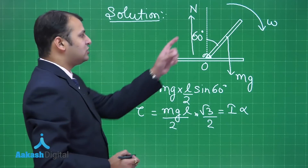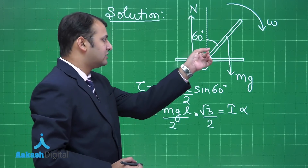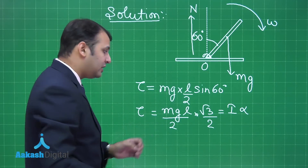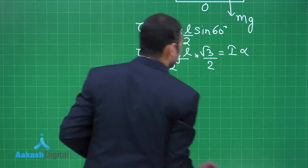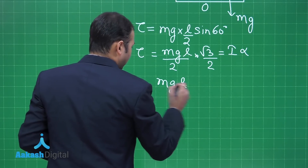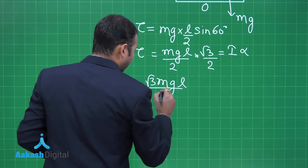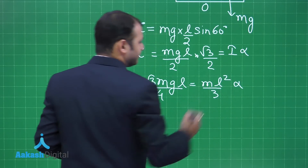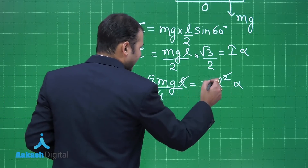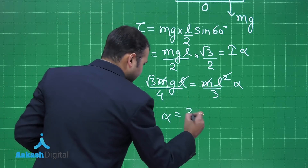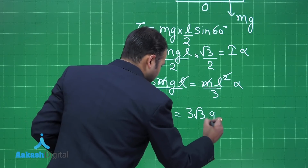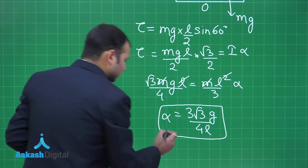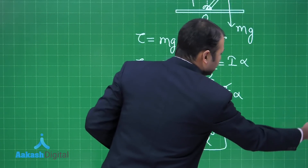This torque also equals Iα. The rod rotates about its hinge at the corner, so the moment of inertia is ML²/3. Setting mg·L·√3/4 = (ML²/3)·α and cancelling terms, we get angular acceleration α = 3√3·g / (4L).